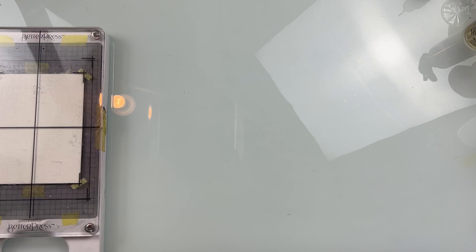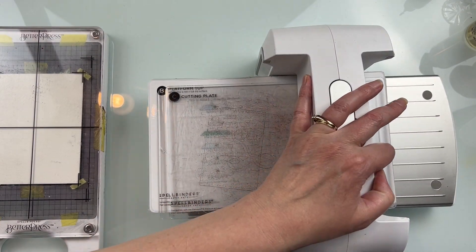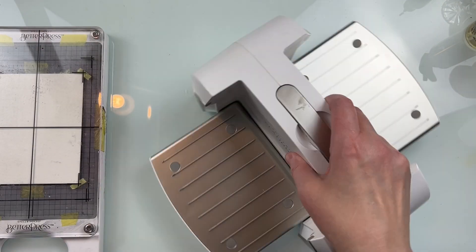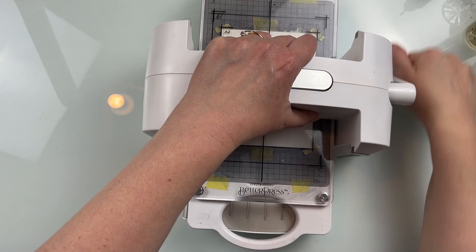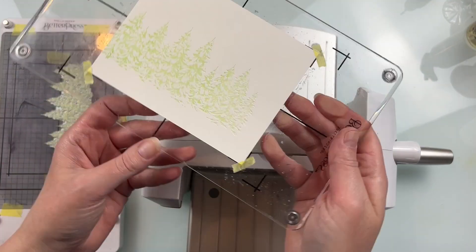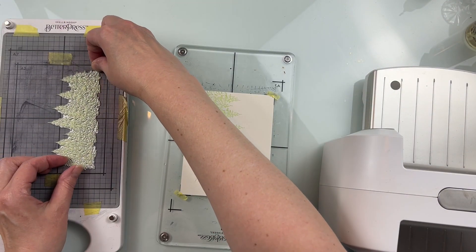Now you can use this press plate as is with just one pressing of the trees, but I wanted to create a forest of trees that looked a little bit fuller, so I'm using a variety of different Better Press inks.